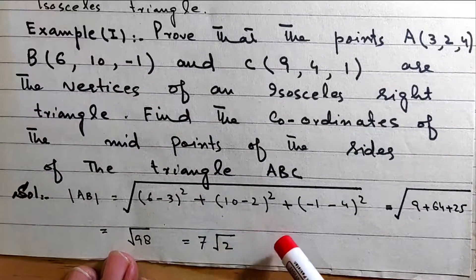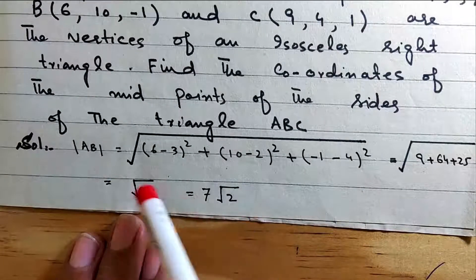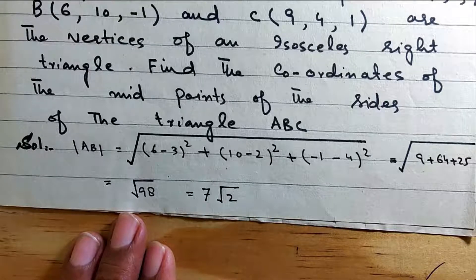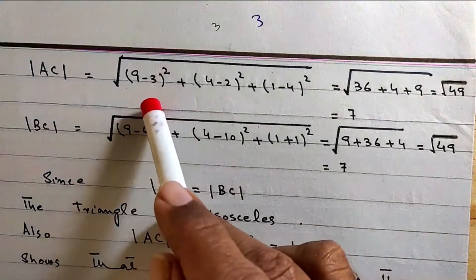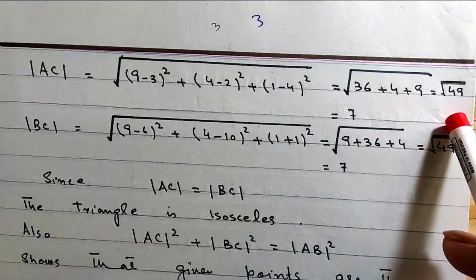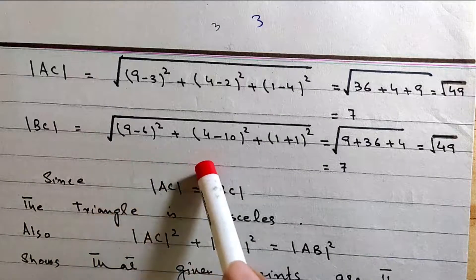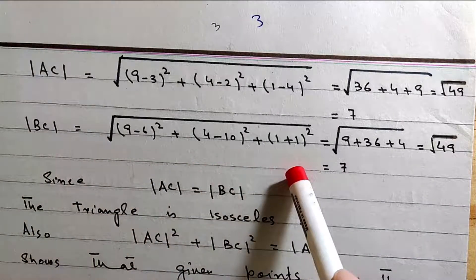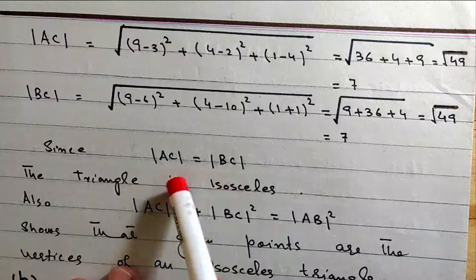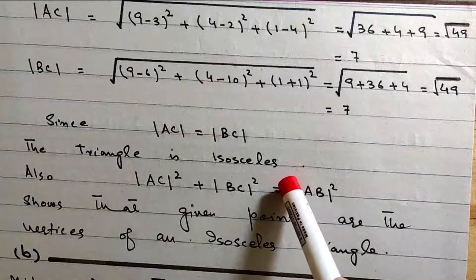We get: (10 minus 2), (minus 1), and (minus 4), giving 7 under root 2. For AC: (9 minus 3), (4 minus 2), (1 minus 3), we get 7 under root 2. Now BC equals: (9 minus 6), (4 minus 10), (1 plus 1), and we get 7. Since AC equals BC, two sides of the triangle are equal, so the triangle is isosceles.